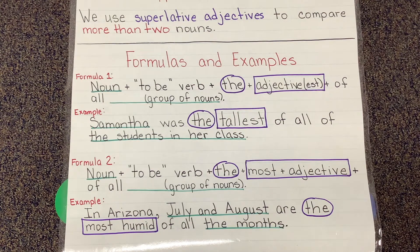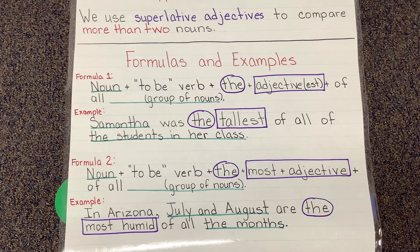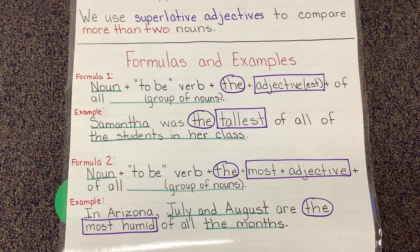The second formula is for those adjectives that have more than two syllables. Formula two looks like this: noun, to-be verb, the, most, the adjective, of all, and then the group of nouns being compared. An example of this formula would sound like this: In Arizona, July and August are the most humid of all the months.